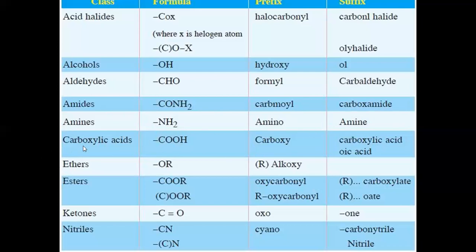Carboxylic acids: COOH functional group - suffix is 'oic acid' - methanoic acid, ethanoic acid, propanoic acid, butanoic acid. Ethers: when R-O-R is present, alkoxy designation is used; for example CH₃-O-CH₃ is methoxymethane (methoxy is the alkoxy group, methane is the root word). Esters: C(=O)-O-R is the oxy-carbonyl group; IUPAC name is alkyl alkanoate - 'oate' is the suffix; examples: ethyl methanoate, ethyl propanoate.